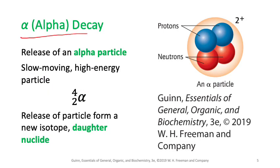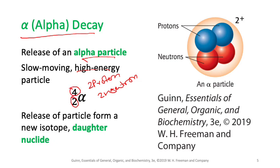Let's start with the first particle: the alpha particle. An alpha particle is a high-energy particle that contains two protons and two neutrons. Because it has two protons and two neutrons, it has a mass number of four and an atomic number of two.